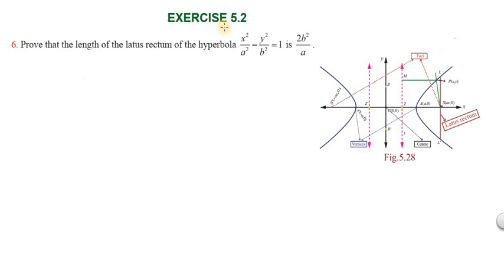Hi students, greetings from Success Education Academy. This is Exercise 5.2, question number 6: Prove that the length of the latus rectum of the hyperbola equation is 2b² by a. So for a hyperbola, the length of the latus rectum LL' is 2b² by a, and we have to prove this.